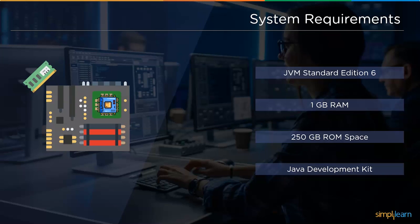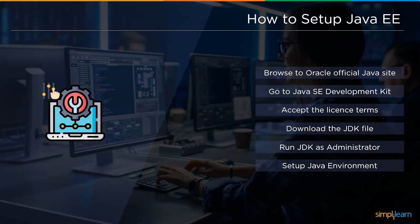Next, we will understand how to install Java Enterprise Edition. The steps are: browse to the Oracle official Java site, go to Java Standard Edition Development Kit, accept the license terms, download the JDK file, run the JDK file as an administrator, then set up the Java environment. I will drop a link in the description box below which explains in detail how to install Java into your local system.